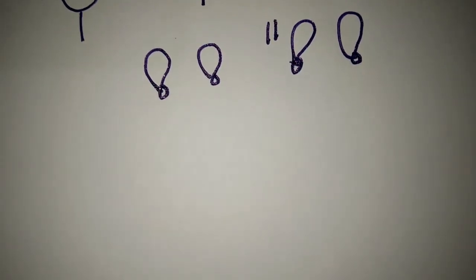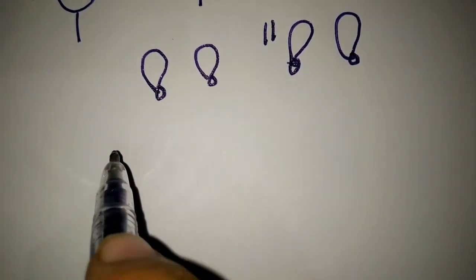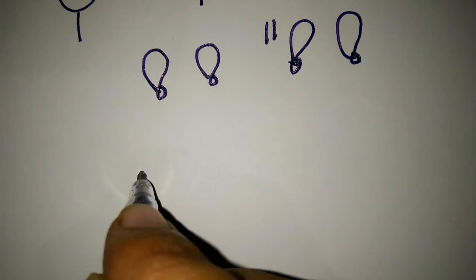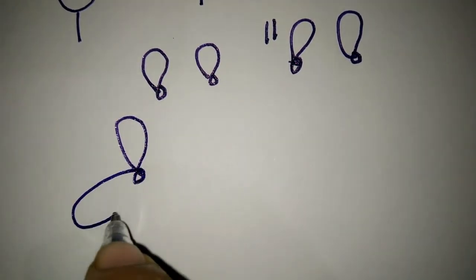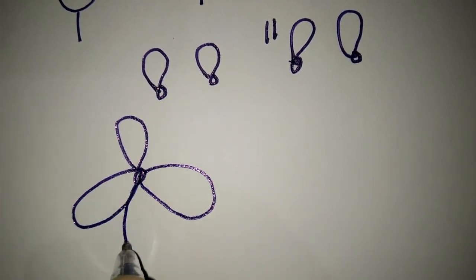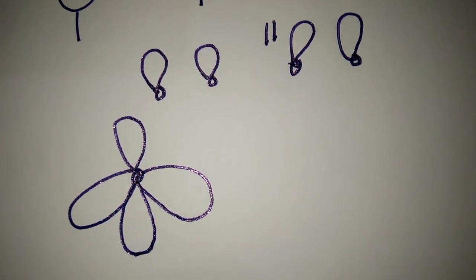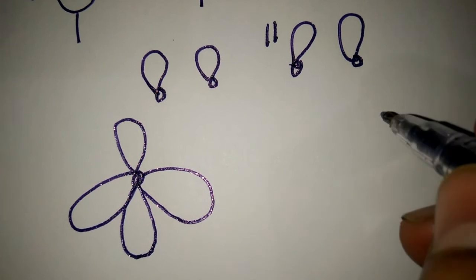These four orbitals mix together and arrange in such a way that there is tetrahedral shape. Tetrahedral shape of four hybrid orbitals.